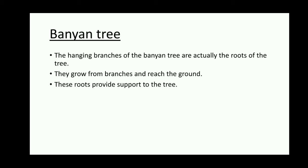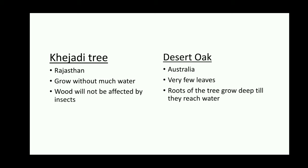Let us sum up quickly. The Kajadi tree is found in Rajasthan. It grows without much water, its wood will not be affected by insects, and its bark is used to make medicines. Desert Oak is mostly found in Australia. It has very few leaves, and its roots grow deep into the earth until they reach water.